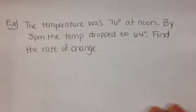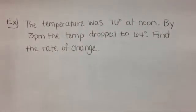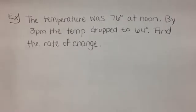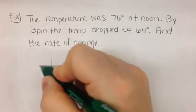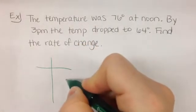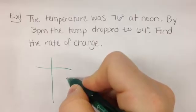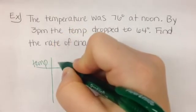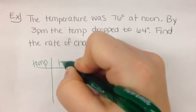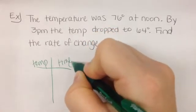Let's take a look at another one. The temperature was 76 degrees at noon. By 3 p.m., the temp dropped to 64 degrees. Find the rate of change. So, let's pull out our important pieces of information. What units am I talking about? Temperature and time or hours. Temp per hour.